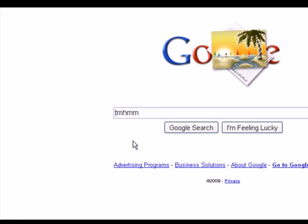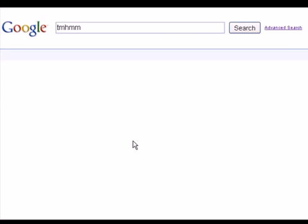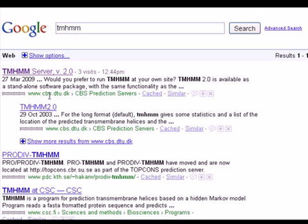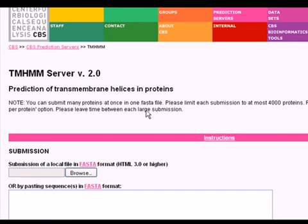Click on the first hit, which is the TMHMM server. This is the TMHMM server. The TM stands for transmembrane. The HMM is for Hidden Markov Model, which is the method used to predict transmembrane helices in protein.